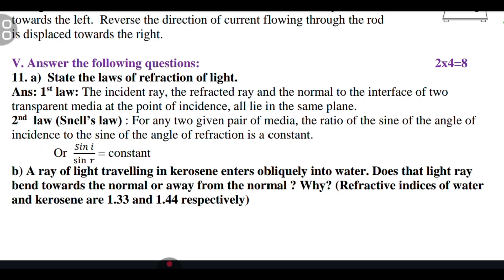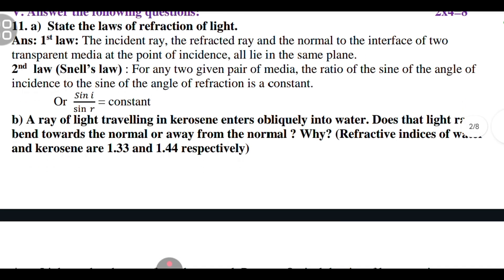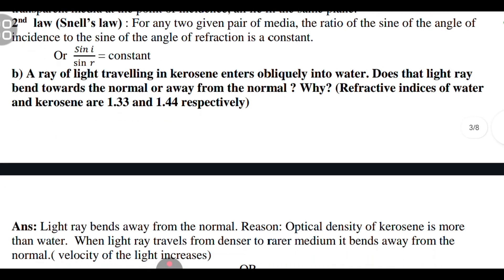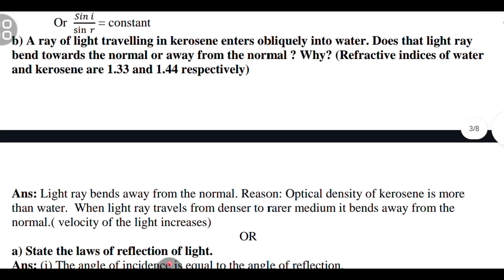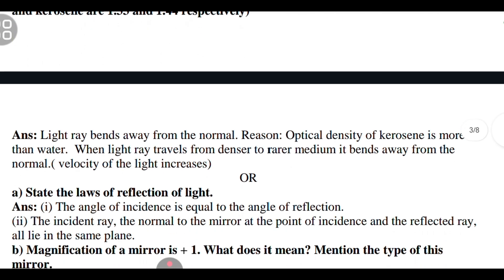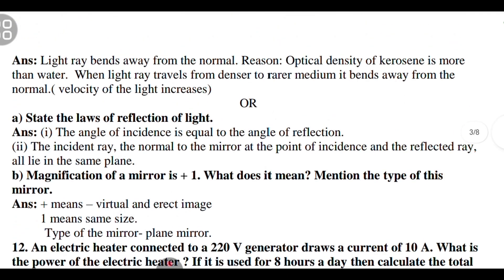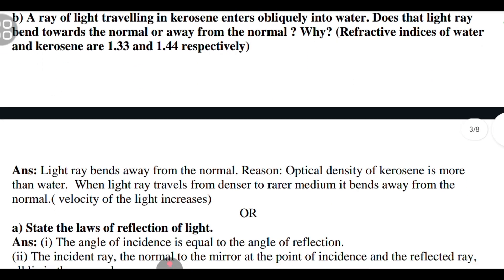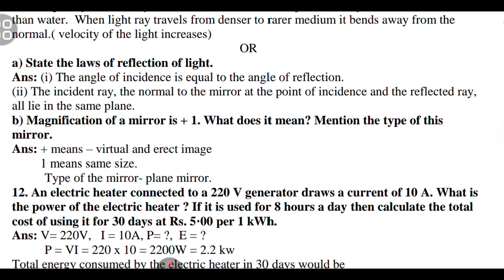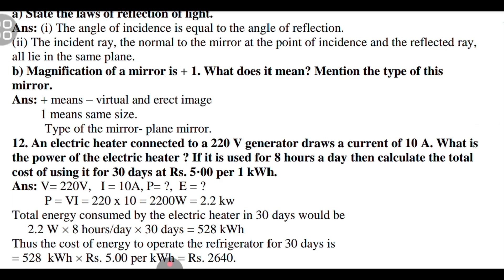You should also draw the diagram and mention all the notations like 2F1 and the position of the image, all these arrow marks are compulsory. What they will check is position of the image at 2F2. You should write this and also write the nature as real, inverted and same size. Ninth question: what is the dispersion of light? Explain the formation of rainbow in the nature.